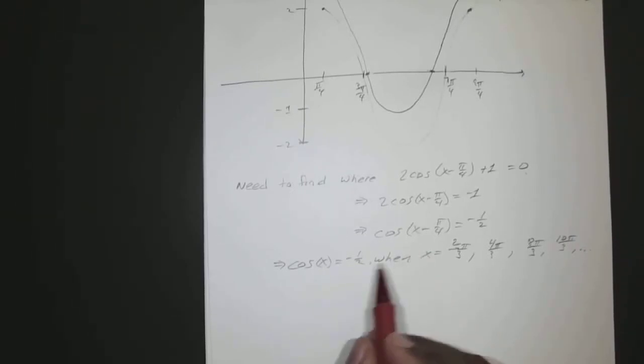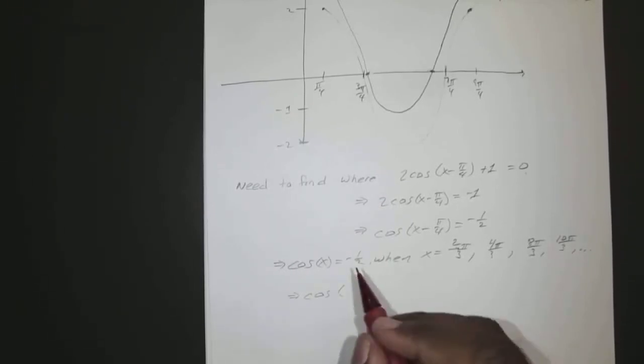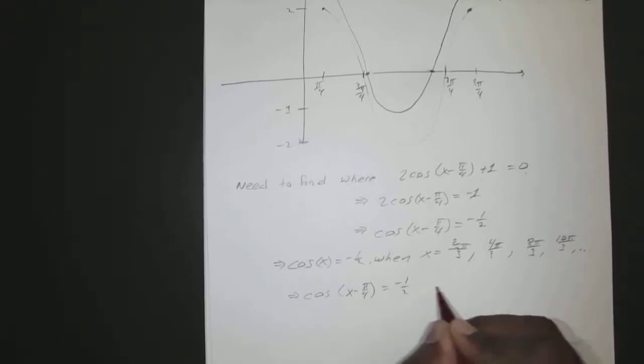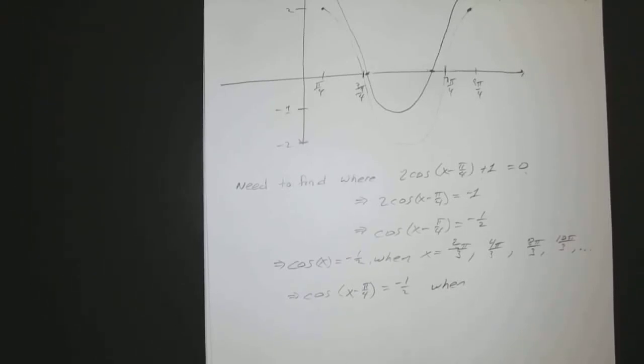So that means cosine of x minus pi over 4 would equal negative 1 half when x minus pi over 4 equals 2 pi over 3, 4 pi over 3, 8 pi over 3, and 10 pi over 3, and so forth and so on.